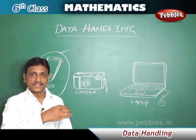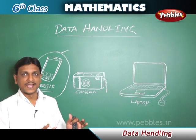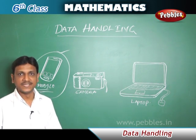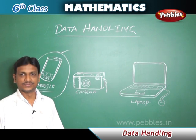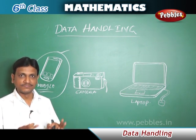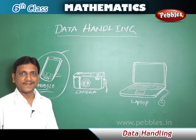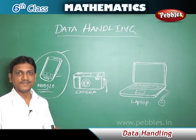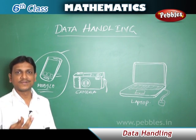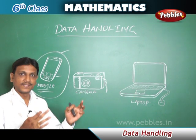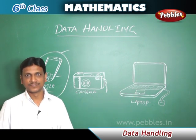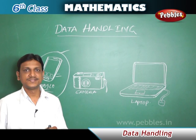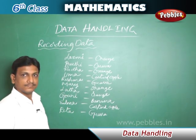This organization of information is called data handling. Data handling helps us take the right decision. When we organize the total information about mobile phones, we can easily find out which brand is the best. If we simply look at features of various brands separately without organizing, we may not be able to reach a right conclusion.